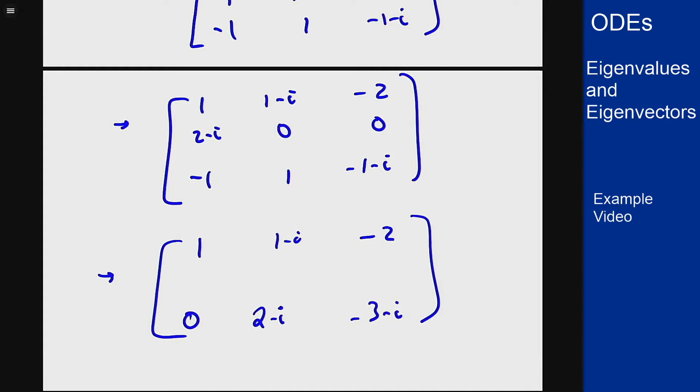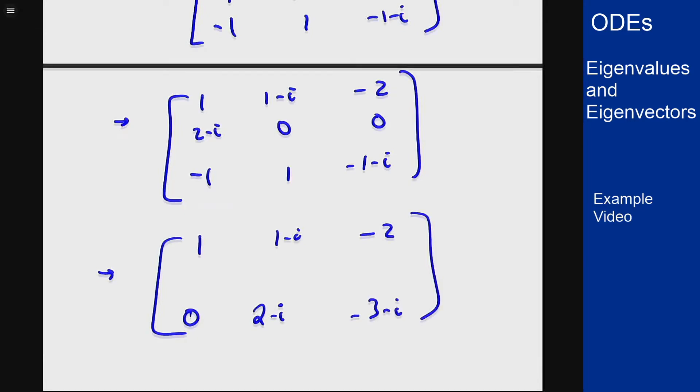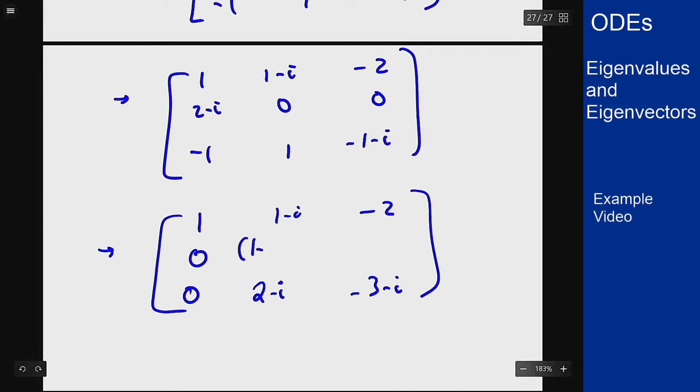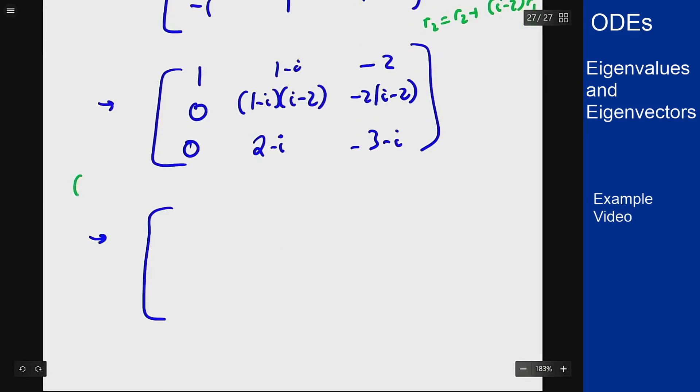And for the middle row I want to add (i minus 2) of the first row to it. So I'll get a 0 here. Here I will get (1 minus i) times (i minus 2). Here I'll get -2 times (i minus 2). Because I'm adding, row 2 is going to be row 2 plus (i minus 2) times row 1. Now let's combine these complex numbers. (1 minus i) times (i minus 2) is going to give me i minus 2 minus i times i, so that's plus 1, and then plus 2i is going to be -1 plus 3i. So I will see here top row is the same: 0, -1 plus 3i, and this will be 4 minus 2i, -3 minus i.